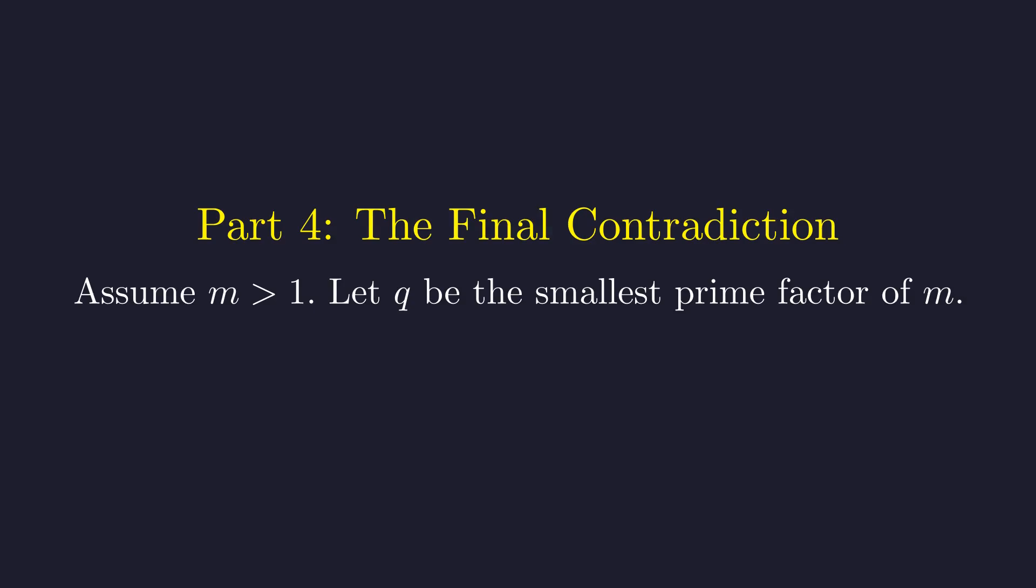We are at the endgame. We have solutions n equals 1 and n equals 3, where m is 1. Could m be greater than 1? Let's find out. Assume for the sake of contradiction that m is greater than 1. Like before, let q be its smallest prime factor.